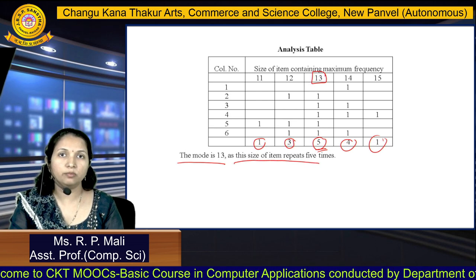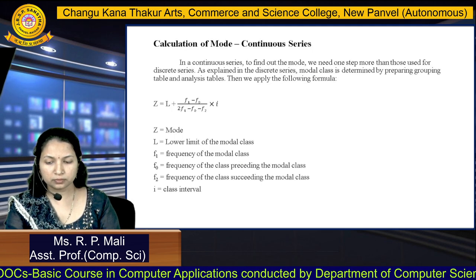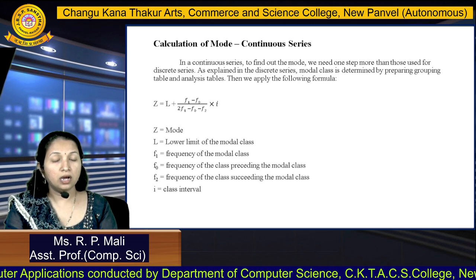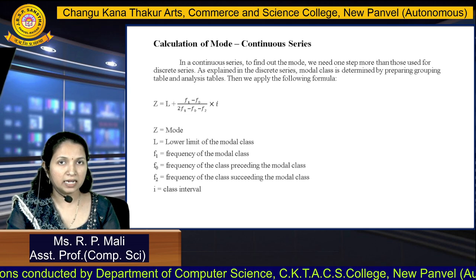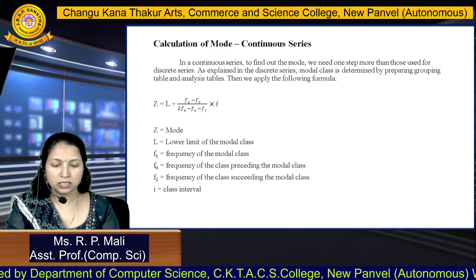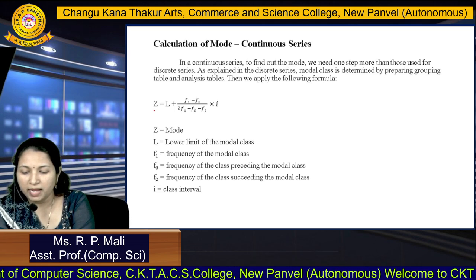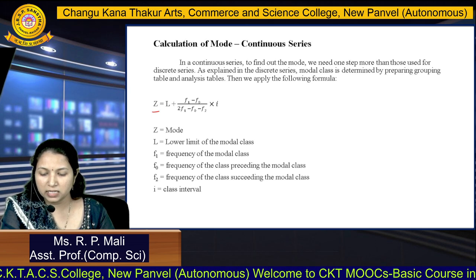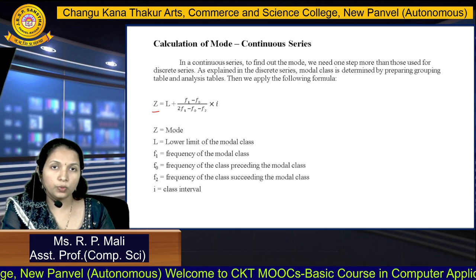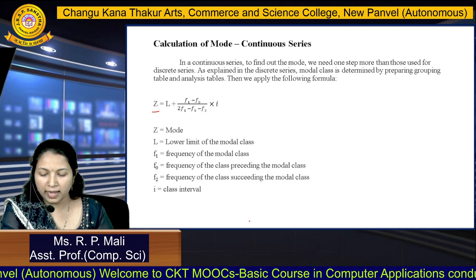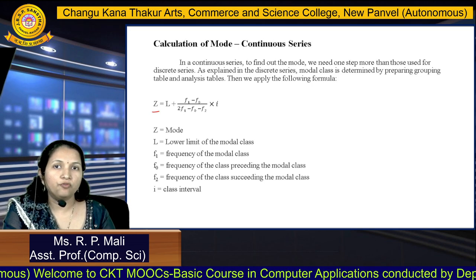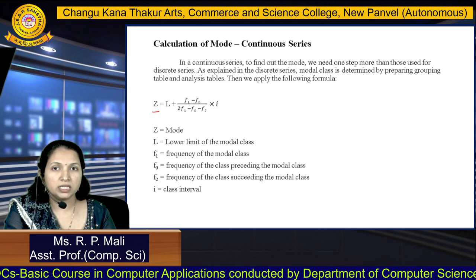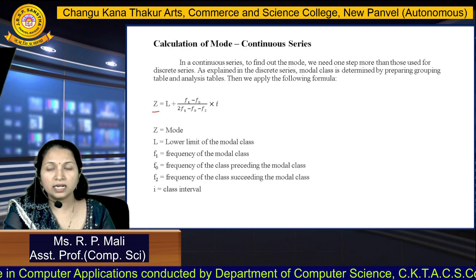This is how you find the mode for the discrete series. Now we are going to find the mode for the continuous series. For continuous series, we also prepare a grouping table and analysis table. After the analysis table, we apply the formula: Z = L + [(F1 − F0) / (2F1 − F0 − F2)] × I, where Z is the mode, L is the lower limit of the modal class, F1 is the frequency of the modal class, F0 is the preceding frequency, F2 is the succeeding frequency, and I is the class interval.